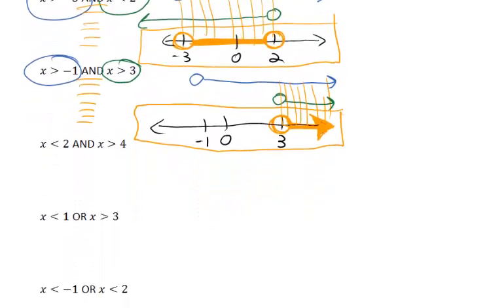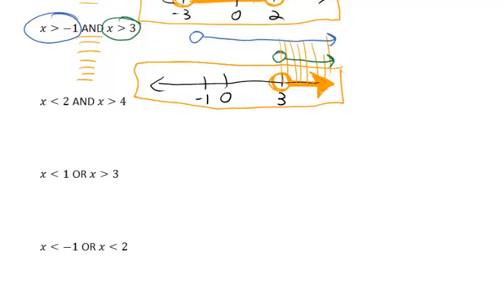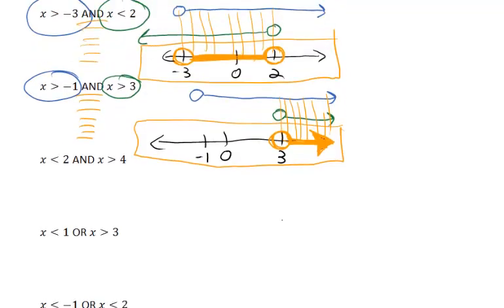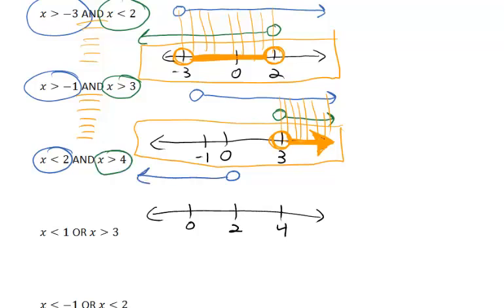How about this next example? x is less than 2 and x is greater than 4. So here's 0, here's 2, here's 4. The first graph, x is less than 2, is from 2 down. The second graph, x is greater than 4, is from 4 up.